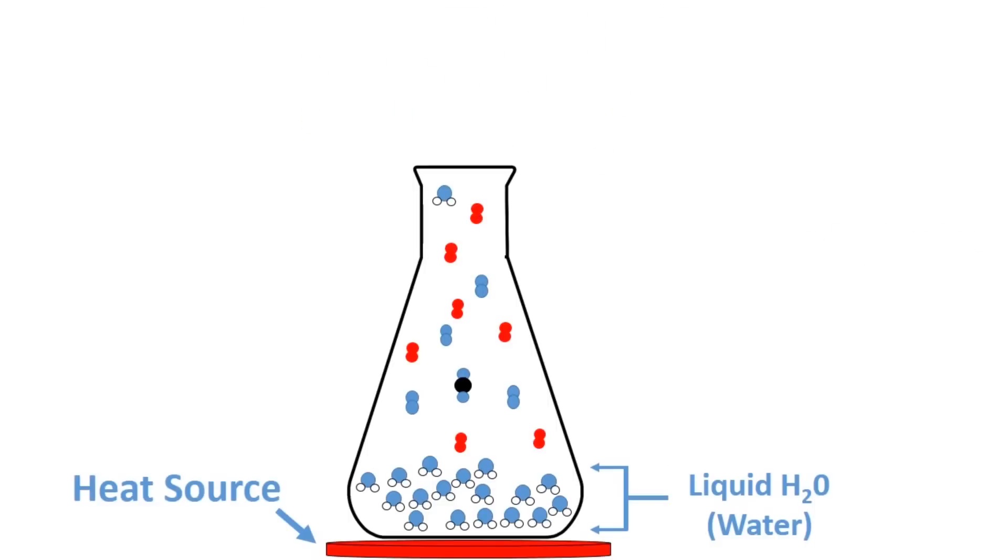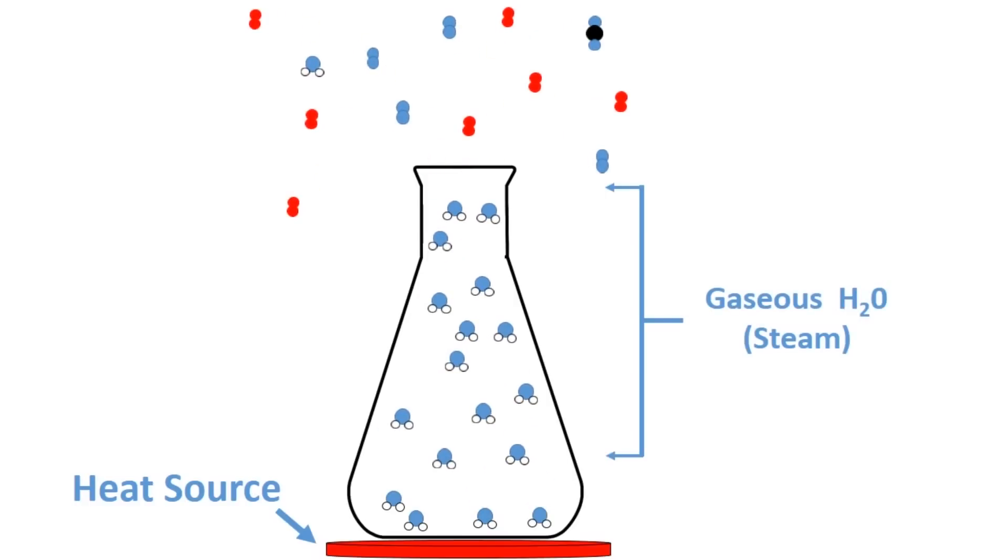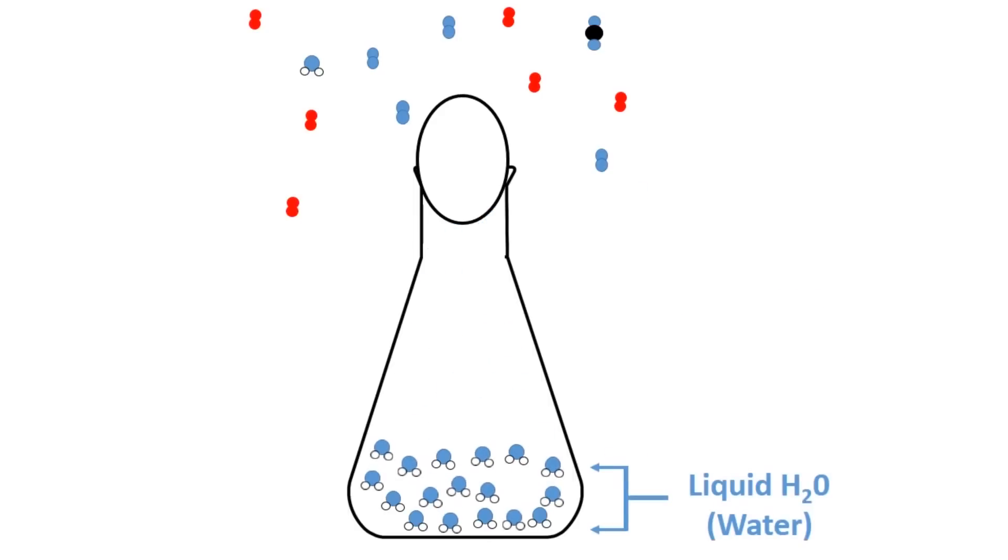But when you fill the bottle up with steam, it pushes all the air molecules out. Now, when you place the egg on the bottle and remove it from the heat source, the steam condenses back into water, leaving nothing to exert a force upward on the egg. And this allows the air molecules on the outside to push the egg into the bottle.